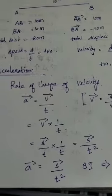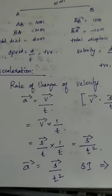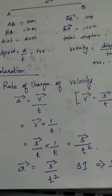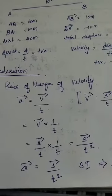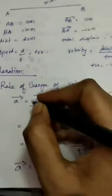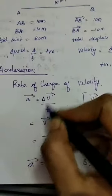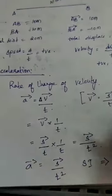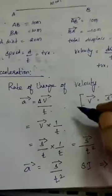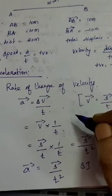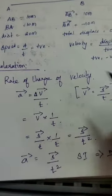Whenever a change in velocity takes place within a specified time, we call that quantity acceleration. Acceleration is defined as the rate of change in velocity. Change in velocity in a given time — I use the symbol delta here, the triangular symbol, which means a change in velocity. As per the definition, acceleration is change in velocity divided by time taken.